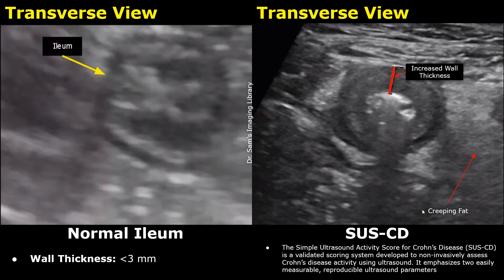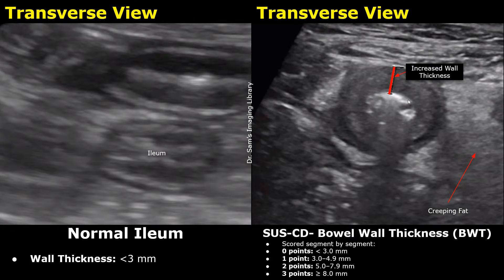The Simple Ultrasound Activity Score for Crohn's Disease (SUSCD) is a validated scoring system developed to non-invasively assess Crohn's disease activity using ultrasound. It emphasizes two easily measurable, reproducible parameters: bowel wall thickness and color Doppler signals. This system is helpful in follow-up and monitoring of Crohn's disease. Bowel wall thickness is scored segment by segment — the terminal ileum is calculated separately from the colon. The score ranges from 0 to 3 points: below 3 mm scores 0; 3–4.9 mm scores 1; 5–7.9 mm scores 2; and 8 mm or greater scores 3.